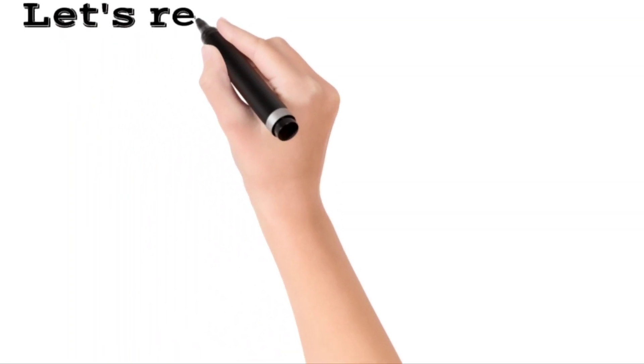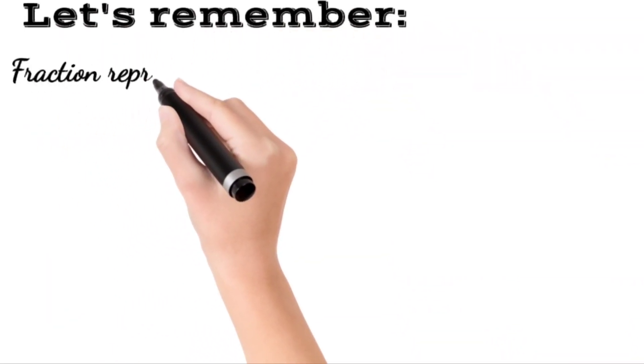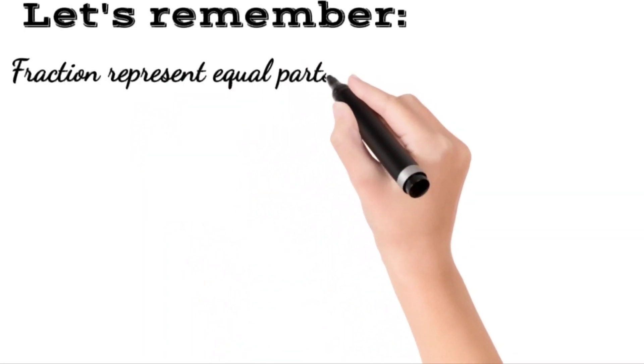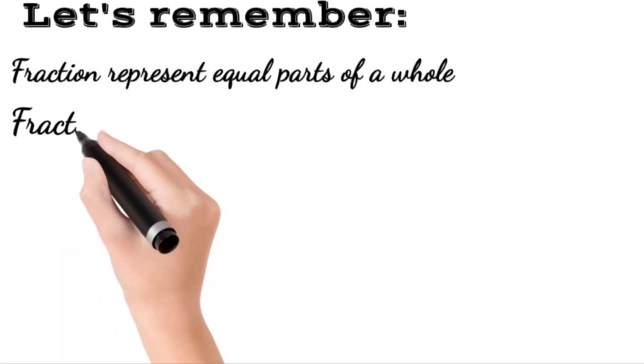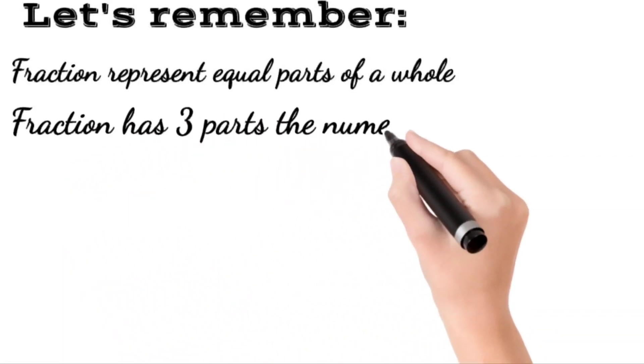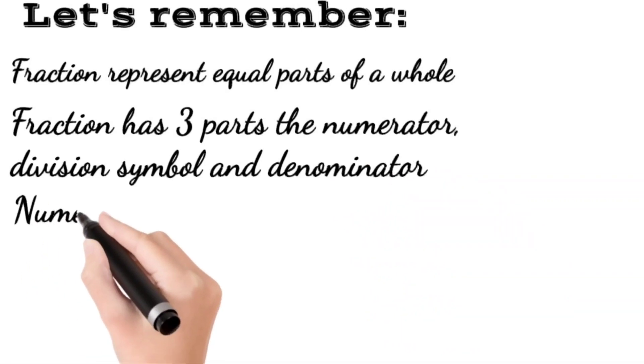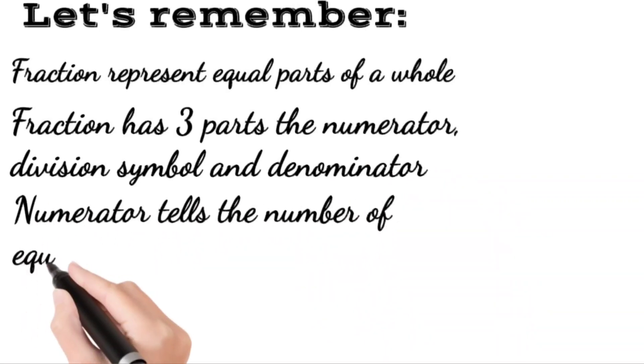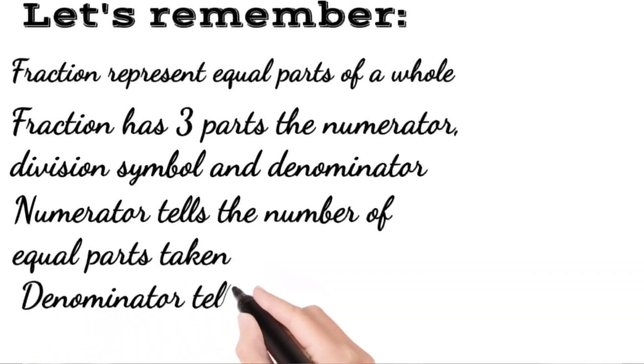Let's remember this. Fraction represents equal parts of a whole. Fractions have three parts. Numerator tells the number of equal parts taken. Denominator tells the total number of equal parts.